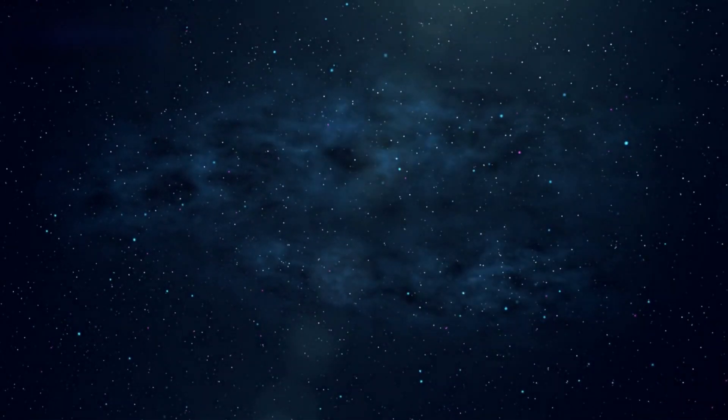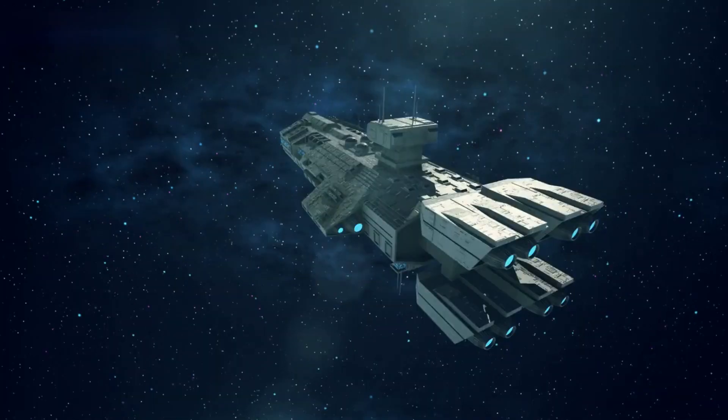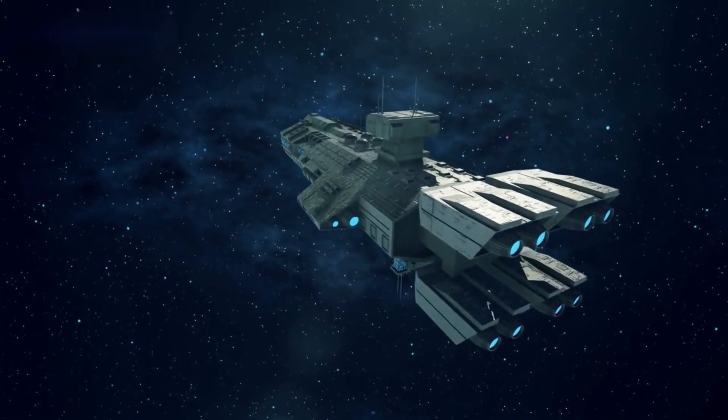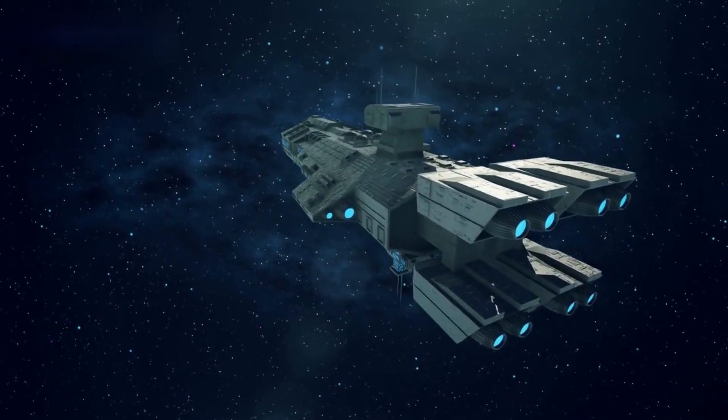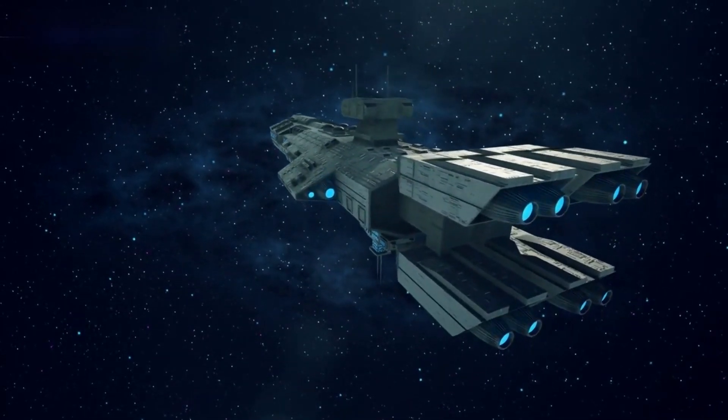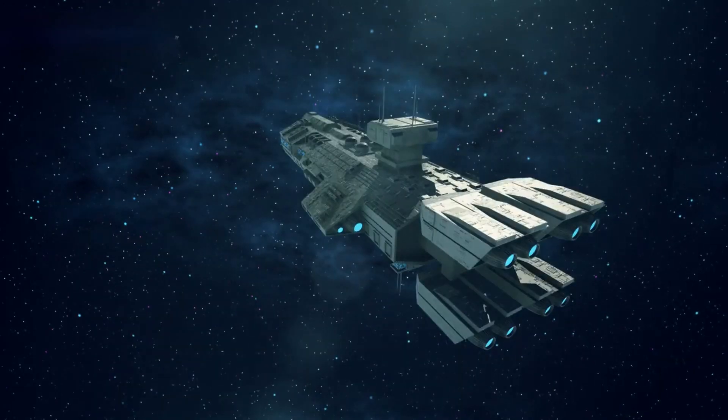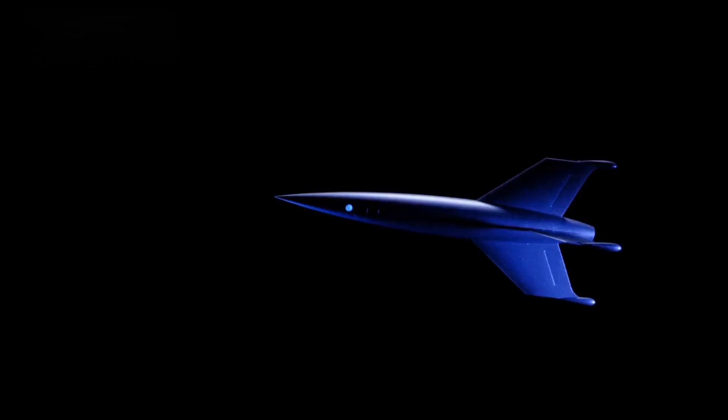Space propulsion company Pulsar Fusion has started construction on a large 8-meter nuclear fusion chamber in England called the Direct Fusion Drive, as it races to become the first firm to fire a nuclear fusion powered propulsion system in space. This system is set to provide a speed of 805,000 kilometers per hour for the rocket, four times faster than the speed of the nuclear engine that NASA is currently researching.